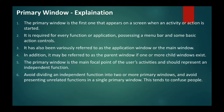For example, when you click on Microsoft PowerPoint, the first screen that appears — MS PowerPoint itself — is the primary window. It is required for every function or application, and it contains the menu bar and basic action controls. It is also referred to as the application window or the main window. If one or more child windows exist, it can be called a parent window. The primary window is the main focal point of the user's activities and represents an independent function.